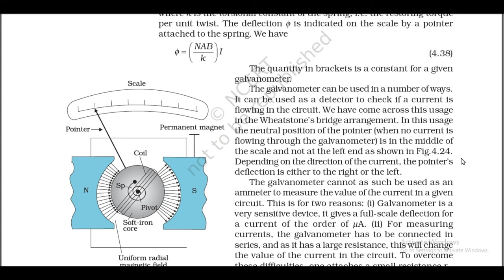The galvanometer cannot as such be used as an ammeter to measure the value of current in a given circuit. This is for two reasons: first, the galvanometer is a very sensitive device — it gives a full-scale deflection for a current of the order of microamperes (μA). Second, for measuring currents...